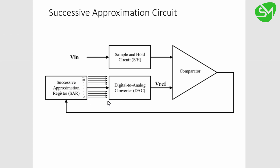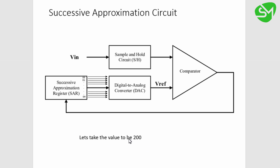The SAR outputs 10-bit data to a DAC, which converts it back to analog and feeds it to the inverting terminal of the comparator. The logic is simple: when the non-inverting terminal has a higher voltage, the comparator output is high; when it is lower, the output is low. Let's assume a 10-bit ADC and take the analog input value to be 200. Let's see how this successive approximation circuit finalizes and approximates this value.